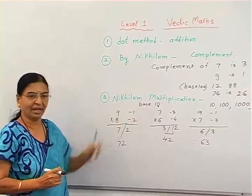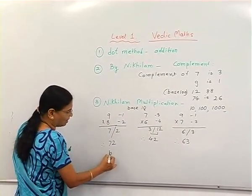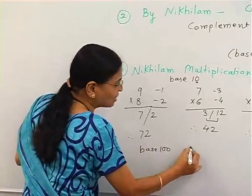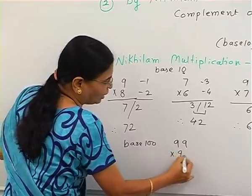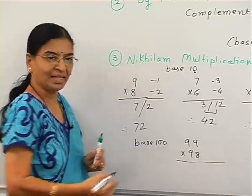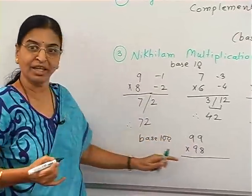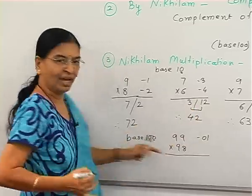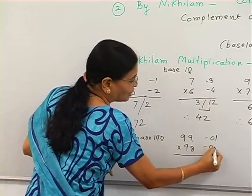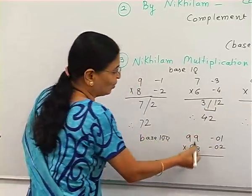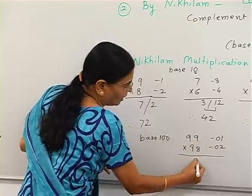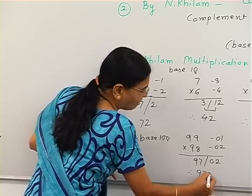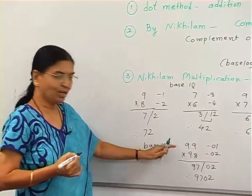Now for base 100: suppose we want to multiply 99 into 98. The digits in the Nikhilam should be 2, so 99 gives minus 01 and 98 gives minus 02. Then 99 minus 2 equals 97, and 2 into 1 equals 2, so the answer is 9702.